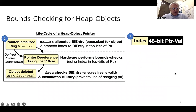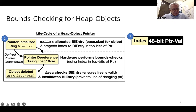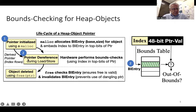The next slide takes us through the life cycle of a pointer to an object in the heap. When malloc is used to allocate a new object, we take the base address and the size of the object and store that information in an entry in our bounds information table. We then embed the index to that entry into the top bits of the pointer returned from the malloc call. Later, when the pointer is used in a load or store operation, the hardware takes that index, retrieves the bounds information, and determines if the reference is in bounds or out of bounds.